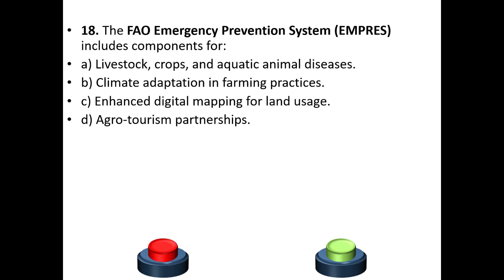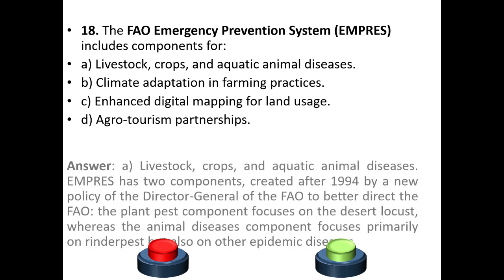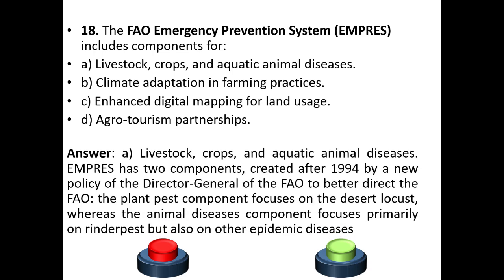Question 18: The FAO Emergency Prevention System includes components for: a) livestock, crops, and aquatic animal diseases, b) climate adaptation in farming practices, c) enhanced digital mapping for land usage, or d) agro-tourism partnerships. The answer is option A — livestock, crops, and aquatic animal diseases.